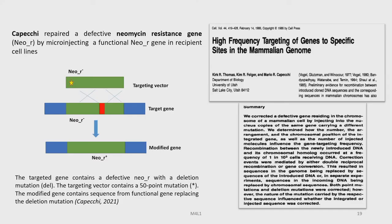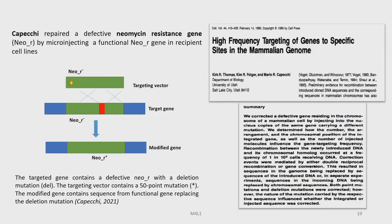This is a very important discovery by Mario Capecchi, describing the potential of this technology. Capecchi then went on to repair a defective neomycin resistance gene by microinjecting a functional copy into neomycin-deficient recipient cell lines. This technology has a lot of potential, and a publication came out in 1986 in Cell describing high-frequency targeting of genes to specific sites in mammalian cells.